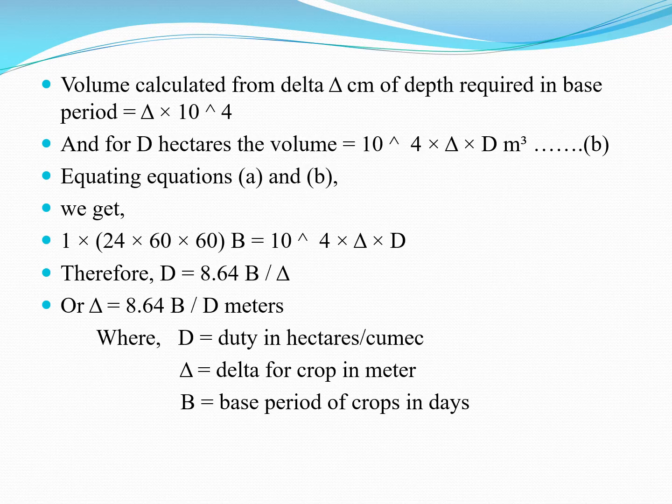By equating both equations, we get: 1 × 24 × 60 × 60 × B = 10⁴ × delta × D. Therefore, capital D = 8.64B / delta, or equivalently delta = 8.64B / D in meters, where D is duty in hectares per cumec, delta is delta for crop in meters, and B is base period of crops in days. This is the relation between duty, delta and base period.